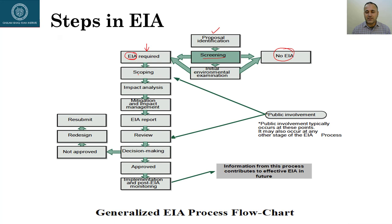After scoping, the next step is impact analysis, which includes mitigation and impact management. These components form the EIA report. The next stage is review, where a regulator or the public reviews the report and makes a decision — either approved or not approved. If not approved, you cycle back, redesign the project, and resubmit. If approved, you proceed to implementation and post-EIA monitoring.